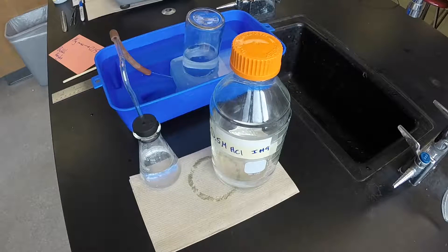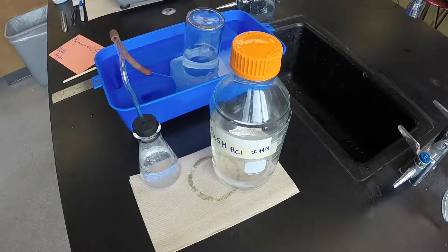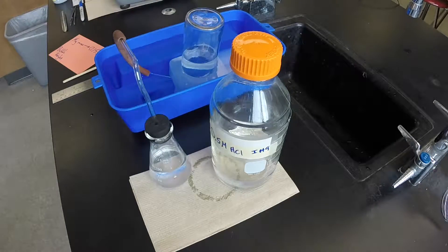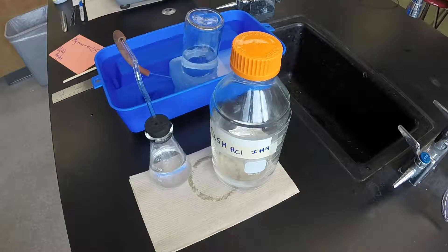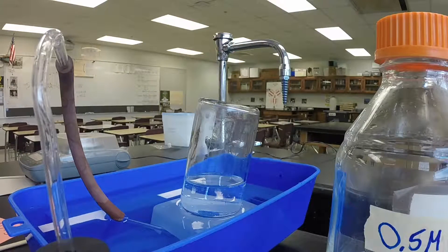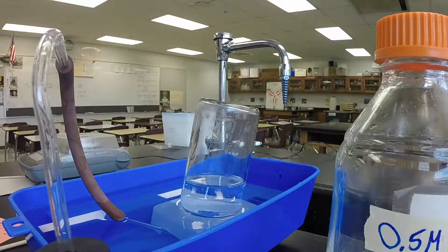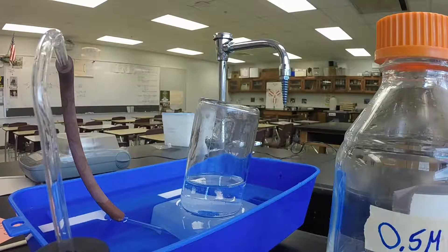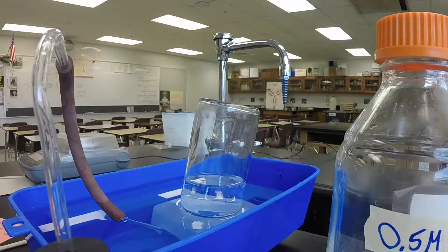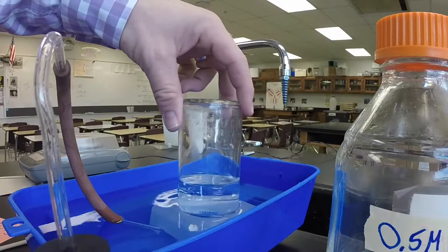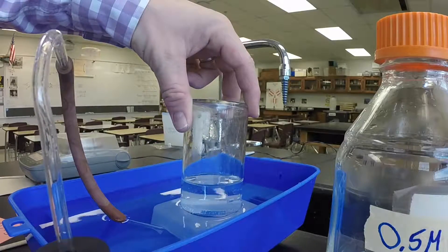There we go. All the magnesium is reacted with hydrochloric acid. It's all dissolved, and we have a beaker full of magnesium chloride solution. And the hydrogen gas produced is now trapped in this jar.